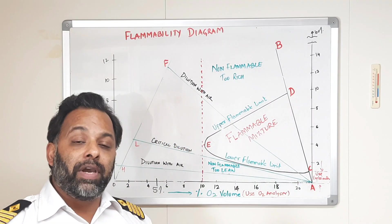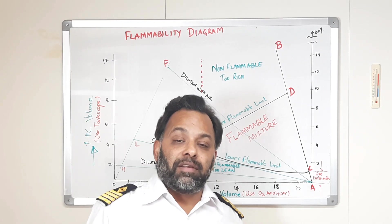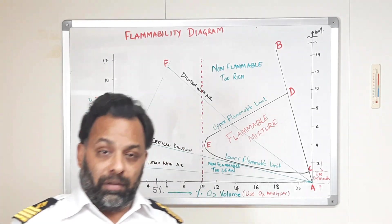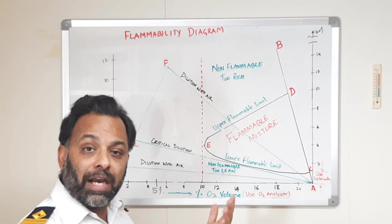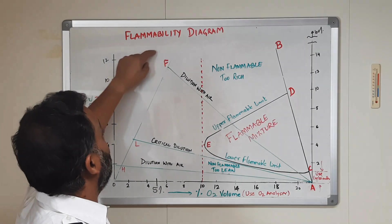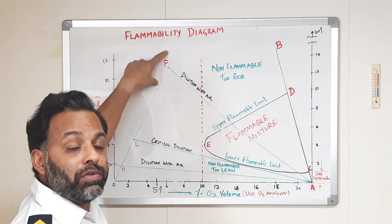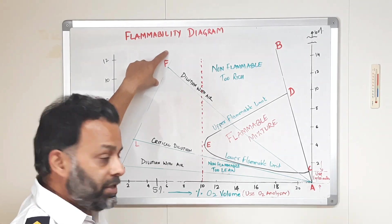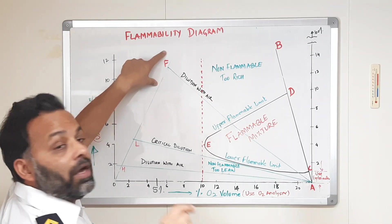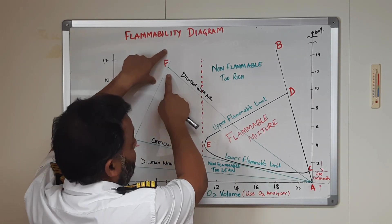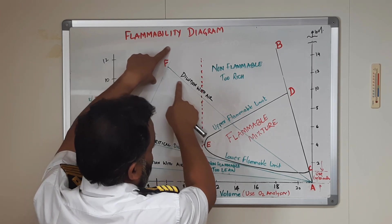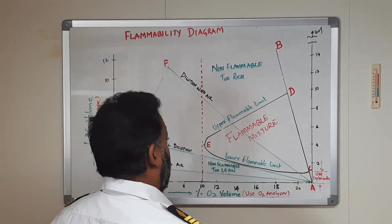Same thing happens when we are readying our tanks for tank entry. We have discharged the cargo, but we have certain amount of hydrocarbon into the system. So, we do not introduce air, we do not straight away go for gas freeing because if we go directly for air, it will pass through this flammable mixture.